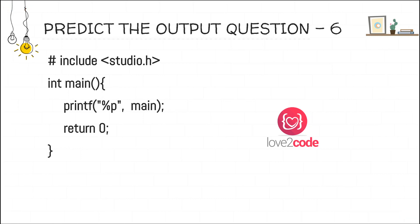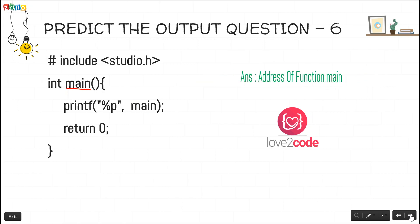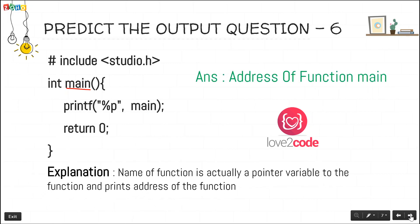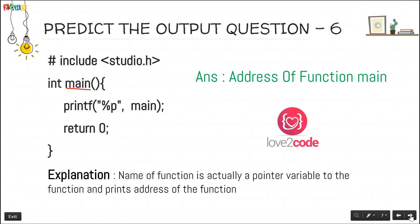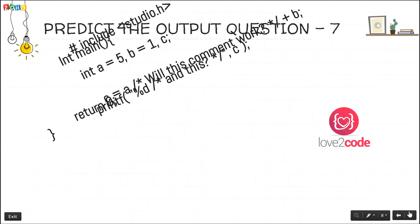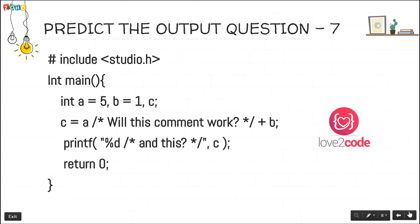The sixth question gives a code snippet where they are trying to print the main method name. This is the main method and its name is 'main', so they are trying to print it. The expected output will be the address of function main. What actually happens is that the name of a function is a pointer variable pointing to the function's address — whenever we try to print the name of a function it will print the address of that function.